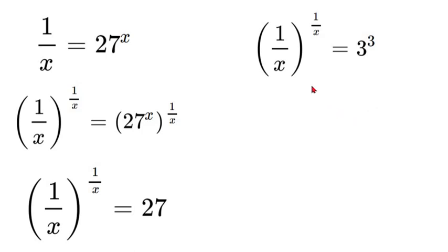And now if you notice our base and our exponent are both the same. So since on the left side our base and exponent are the same and our right side base and exponent are the same, we can just set them equal to each other. So in this case we'll have 1 over x is equal to 3.